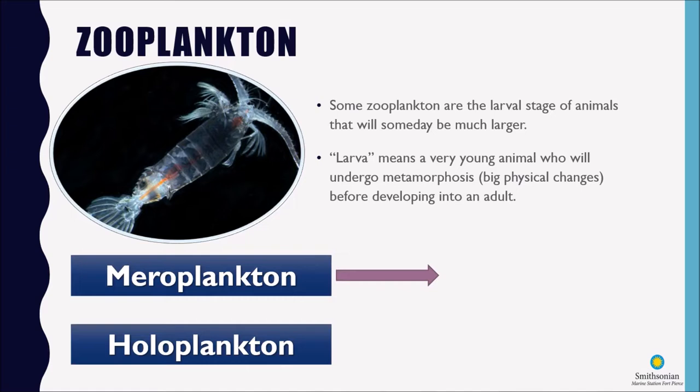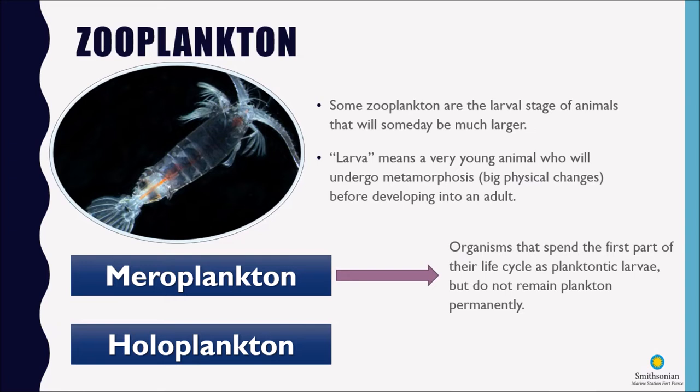So meroplankton are organisms that spend the first part of their life cycle in the plankton but they don't remain in the plankton permanently. They eventually get big enough that they are no longer plankton. However, there are zooplankton called holoplankton that do spend their entire lives as plankton.